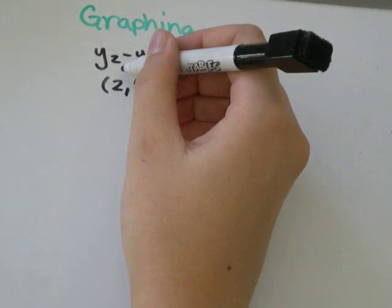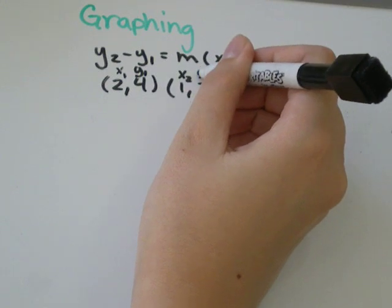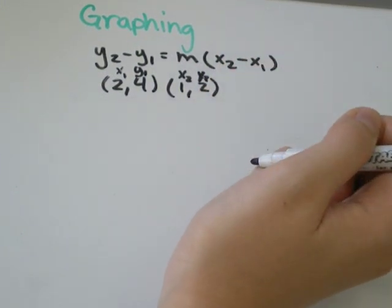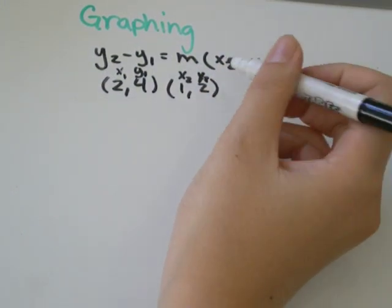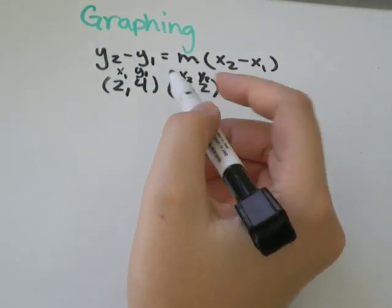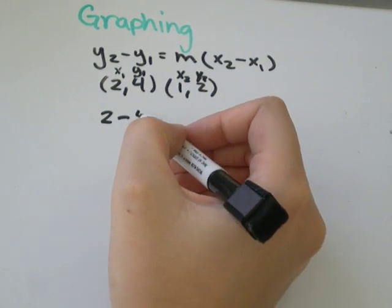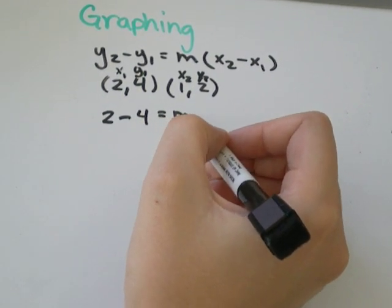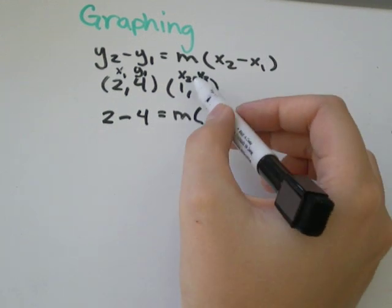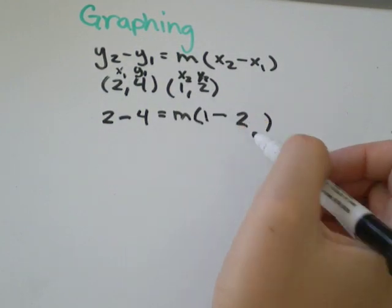So let's say that this is x1, y1, x2, y2. All you need to do is plug everything into the formula. y2 we said was 2, minus y1 would be 4, equals m. x2 is 1 minus x1 is 2.